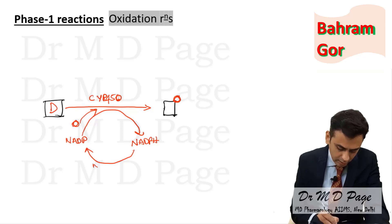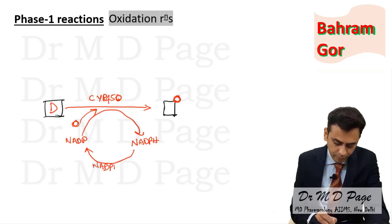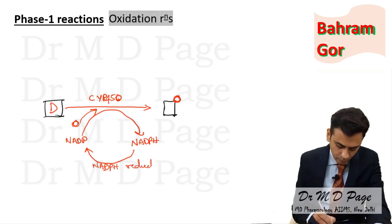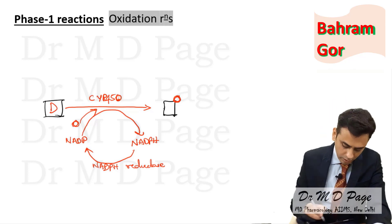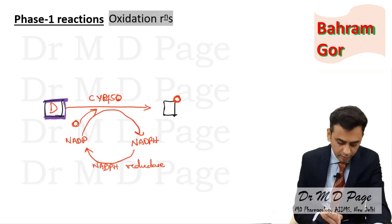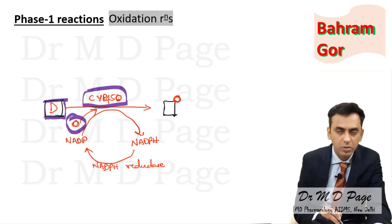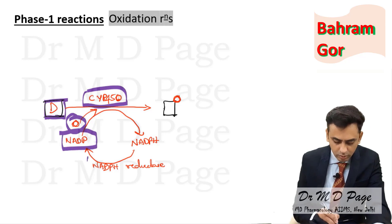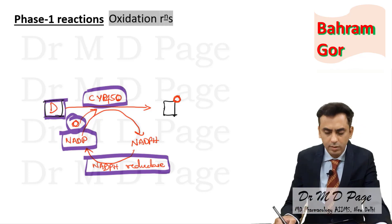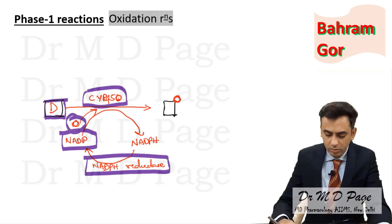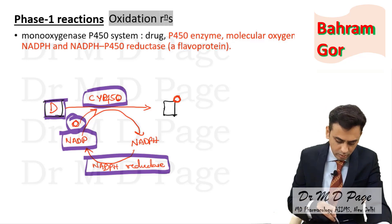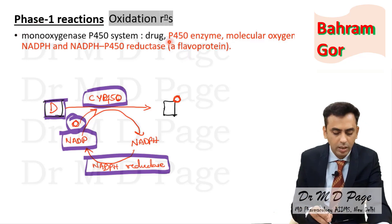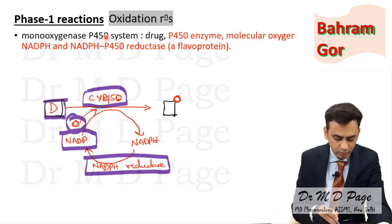To regenerate NADPH back, you need NADPH reductase. So the requirements of the oxidation reaction are: drug, oxygen, cytochrome P450, NADP, and NADPH reductase — which is a flavoprotein. This has been asked as an MCQ. Phase one oxidation reactions are also known as the monoxygenase P450 system, carried out by P450 enzyme, molecular oxygen, NADPH, and NADPH P450 reductase.